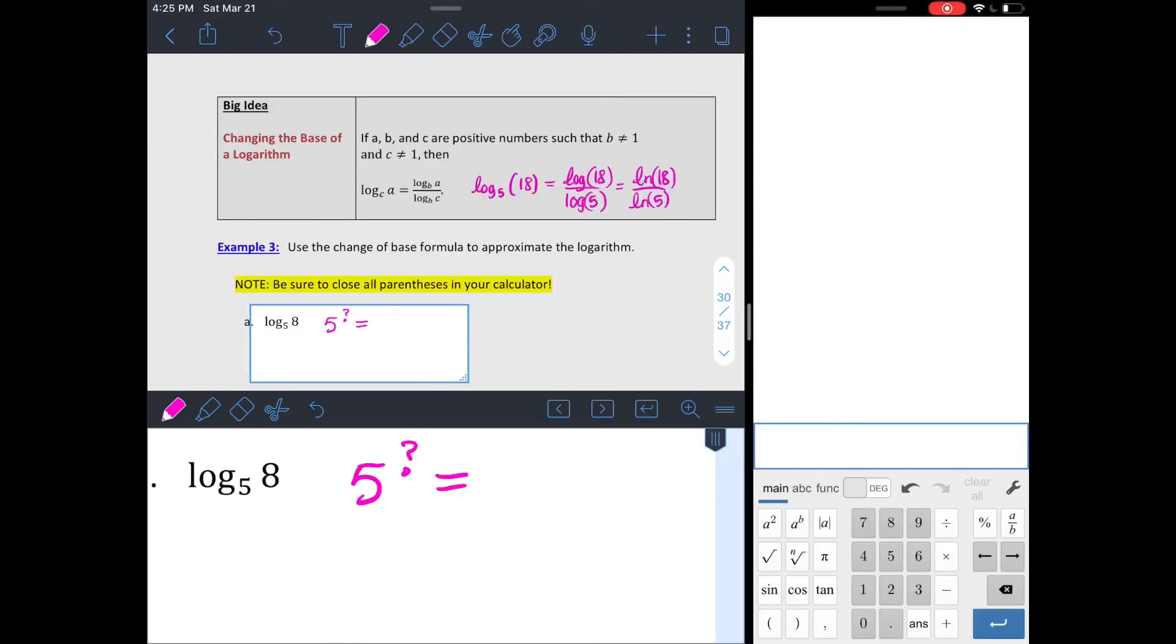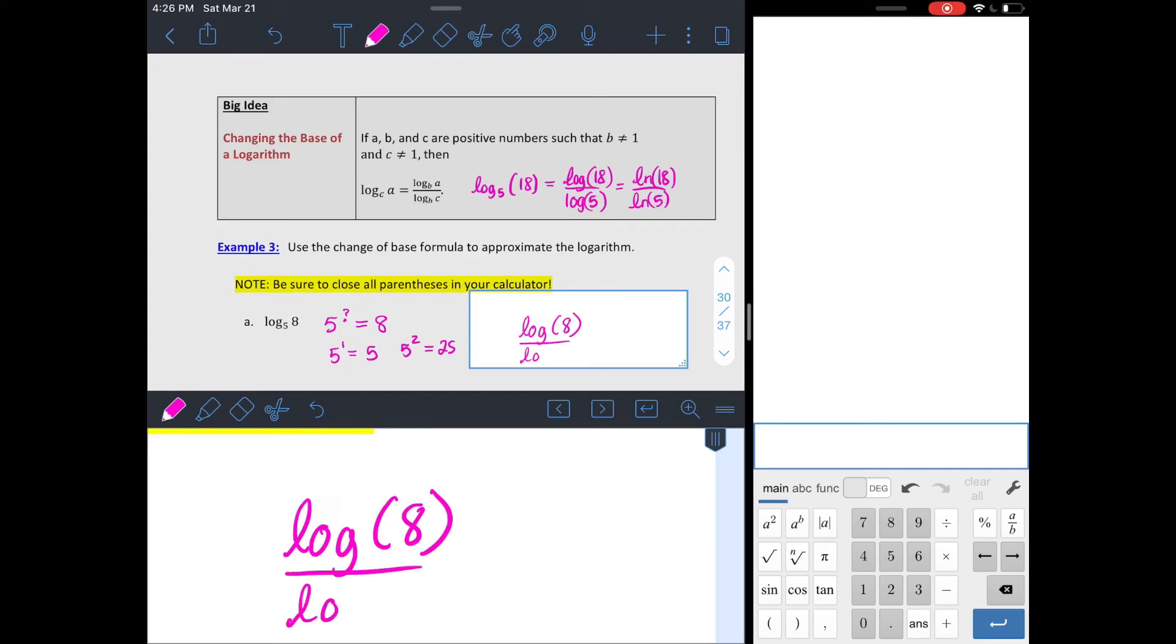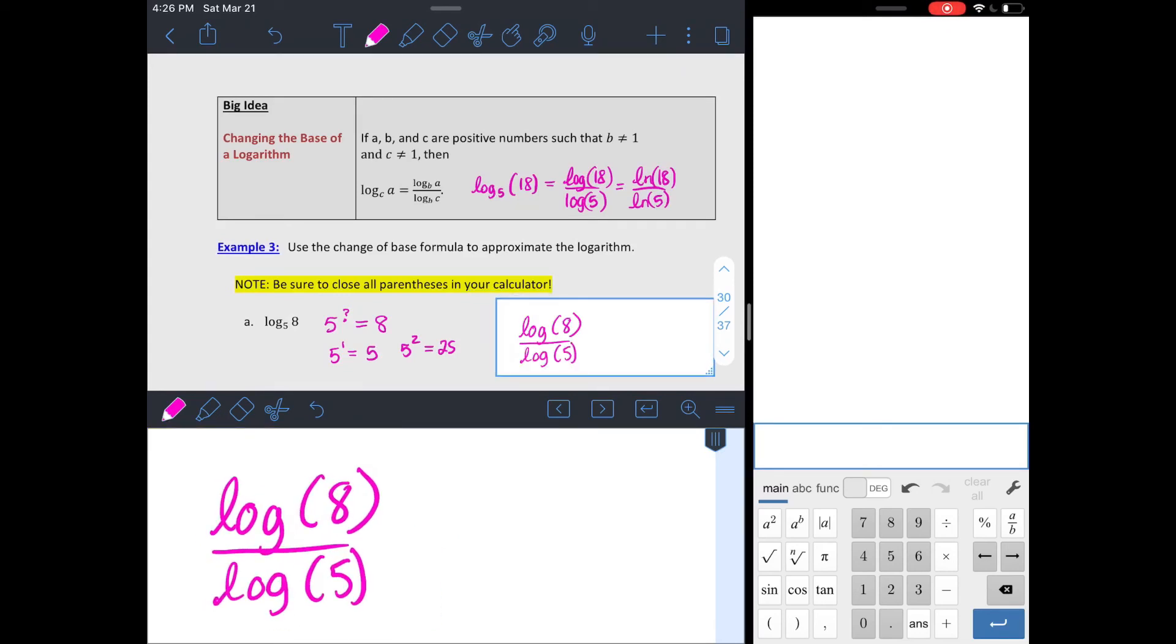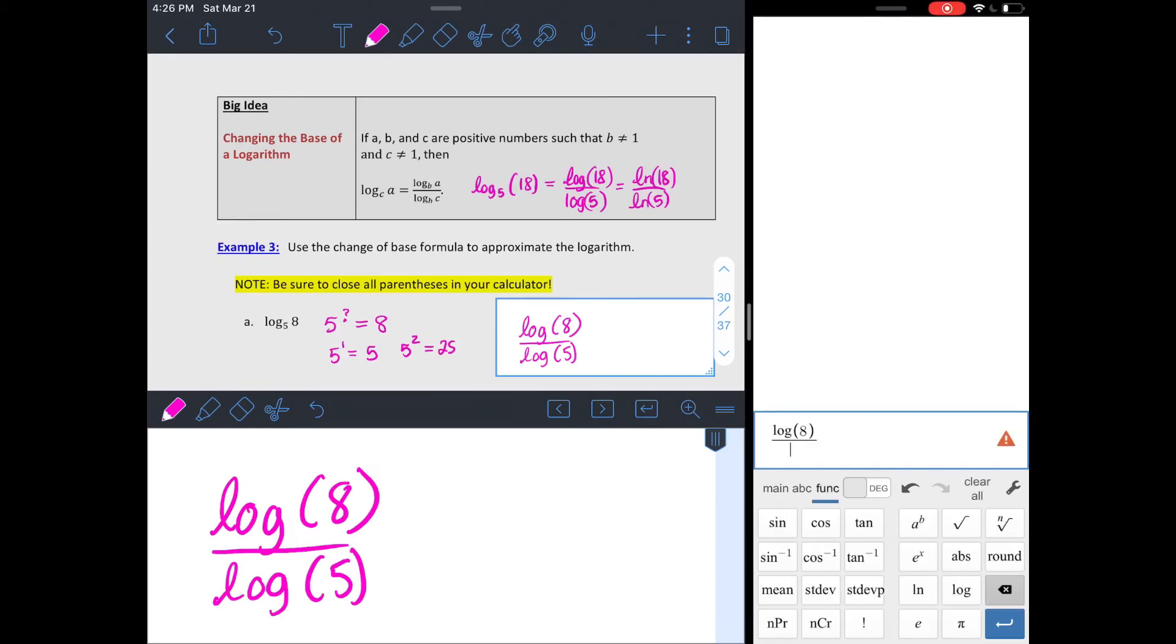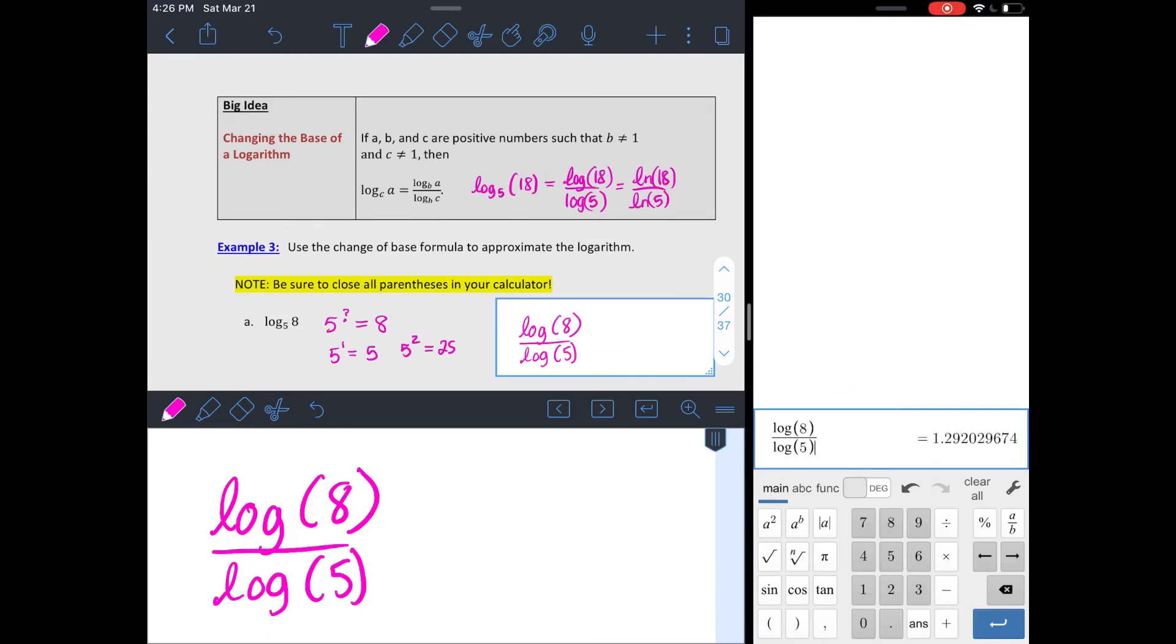So, think in log base 5 of 8. 5 to what power gets you 8? Well, 5 to the 1st is 5, 5 to the 2nd is 25. So it's some decimal in between, and I don't want to guess and check it. Alright, let's use change of base formula. We can do log of 8 that was inside, divided by log of our original base of 5 in the functions menu in my calculator over here. Just make sure you close your parentheses around your two separate logs, and you get approximately 1.292. So, 5 to that power gets you 8.